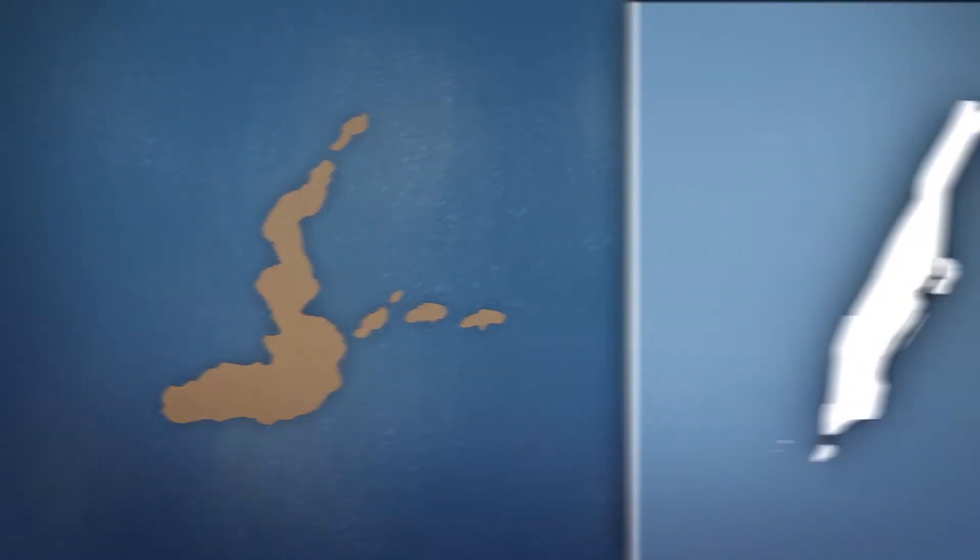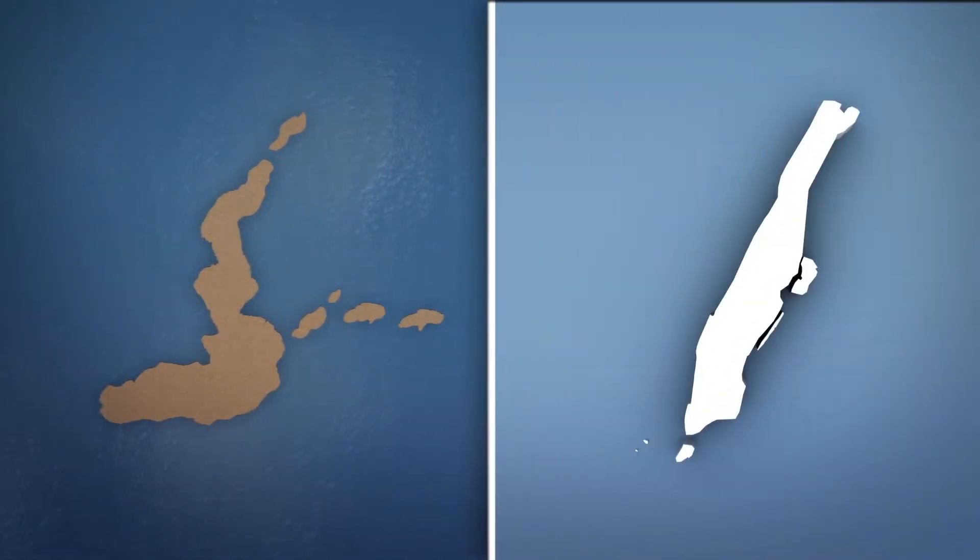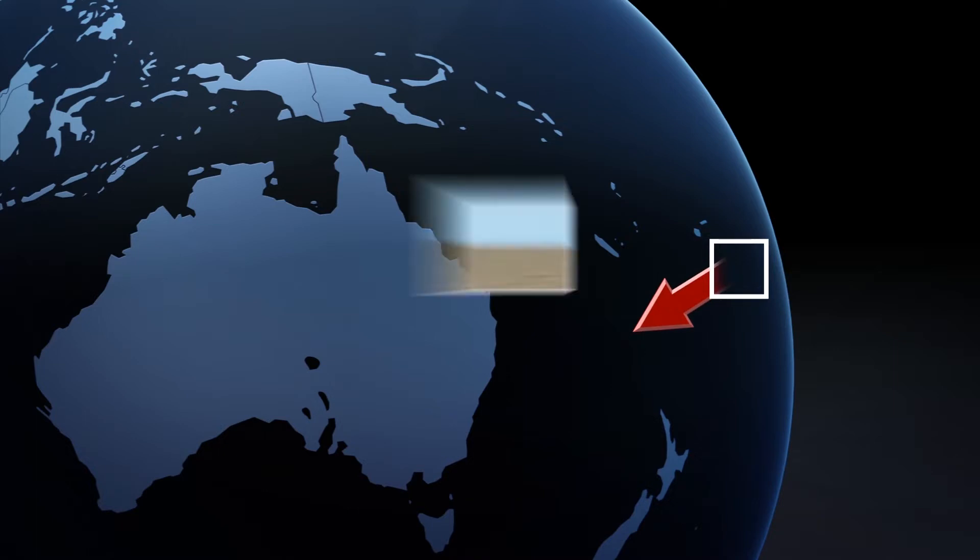According to CNN, the pumice raft is roughly the size of Manhattan. Queensland University of Technology associate professor Scott Bryan told the BBC that the pumice is currently drifting west toward Fiji.